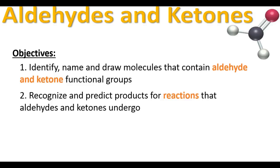In today's objectives we accomplished both goals: we identified, named, and drew molecules containing aldehyde and ketone functional groups. Remember that the ending for an aldehyde is -AL and the ending for a ketone is -ONE. We also recognized and predicted products for three reactions — oxidizing or reducing these functional groups. If you have any questions, please bring them to the next class.